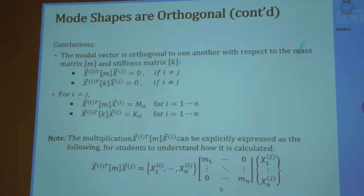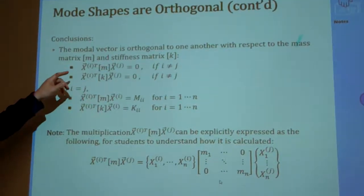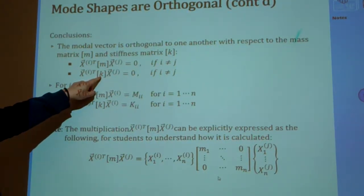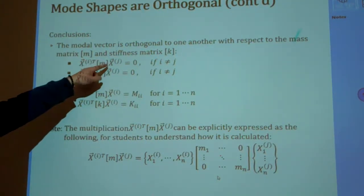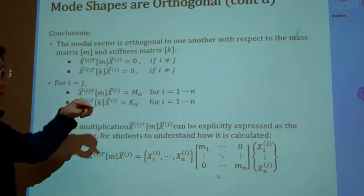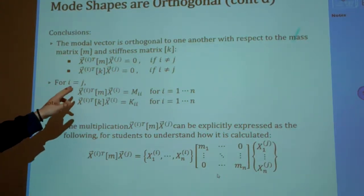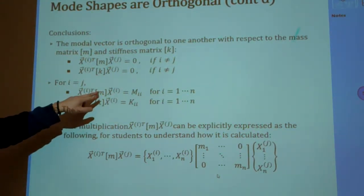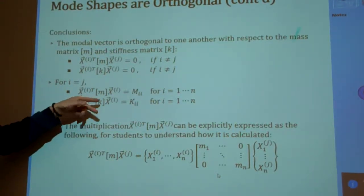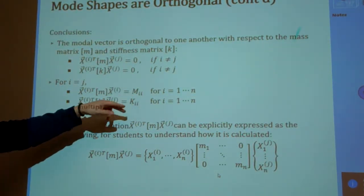The modal vectors with respect to the mass and stiffness matrices - different modal vectors, if you do this operation, then they should be zero. And for the same modal vectors, if you multiply with M and K like this one, then you should get some constant.